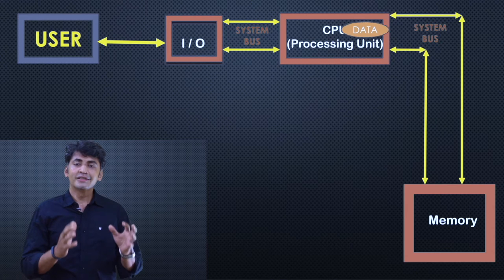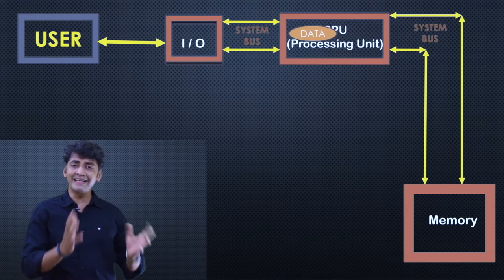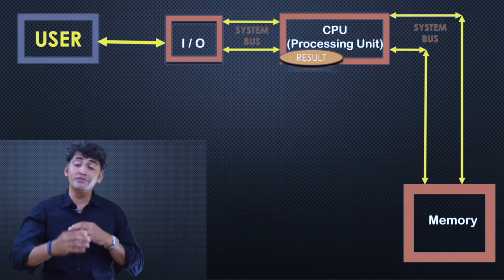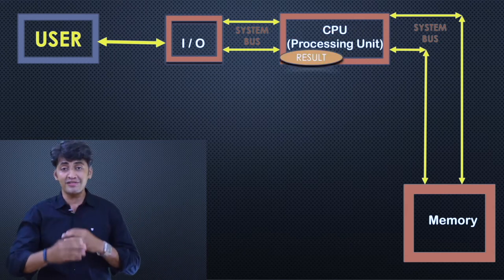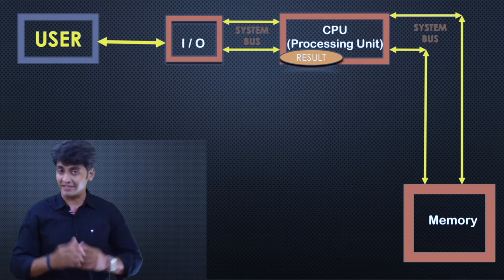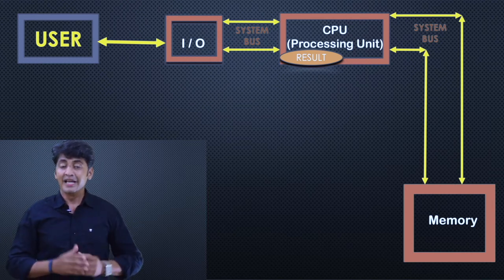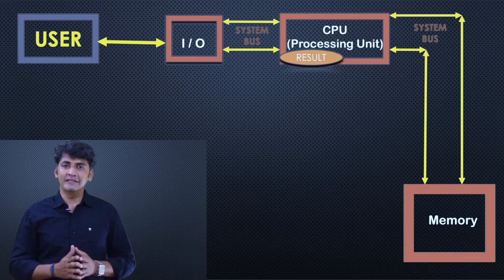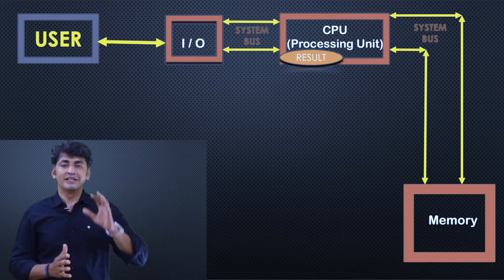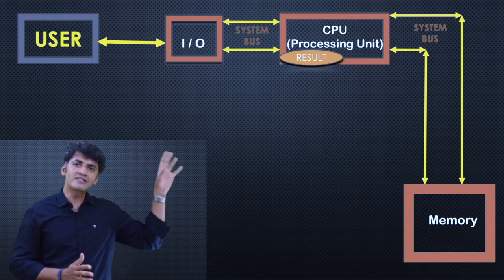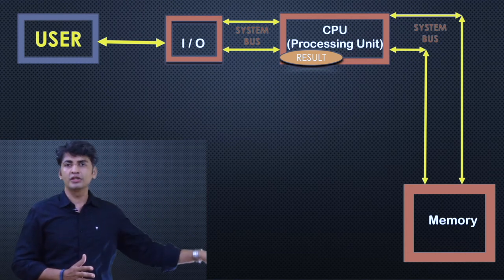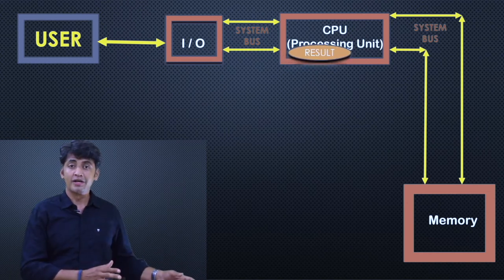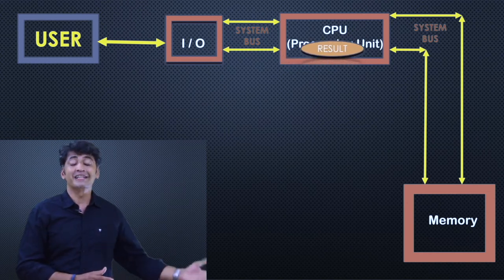Now after getting the data from the memory, the central processing unit will process the data and it will produce the result. If the result is updated, the result will be sent back to the memory for storage or retrieval.